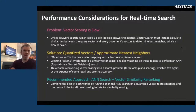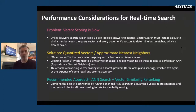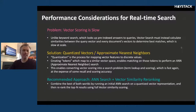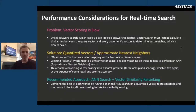There are some performance considerations when doing this for real-time search. Vector scoring is slow — whereas with the traditional inverted index you look up only the documents you need to score, with vector similarities you have to score every single document you're considering to figure out if it's a match. This is equivalent to doing a table scan in a database — very expensive and slow. The solution is the notion of quantized vectors or approximate nearest neighbors (ANN). The idea is to map the vectors into a set of discrete values, ultimately creating tokens you can put into your inverted index to match on, reducing the number of documents you have to do full vector scoring on. This enables you to combine vector scoring with traditional search without being painfully slow.